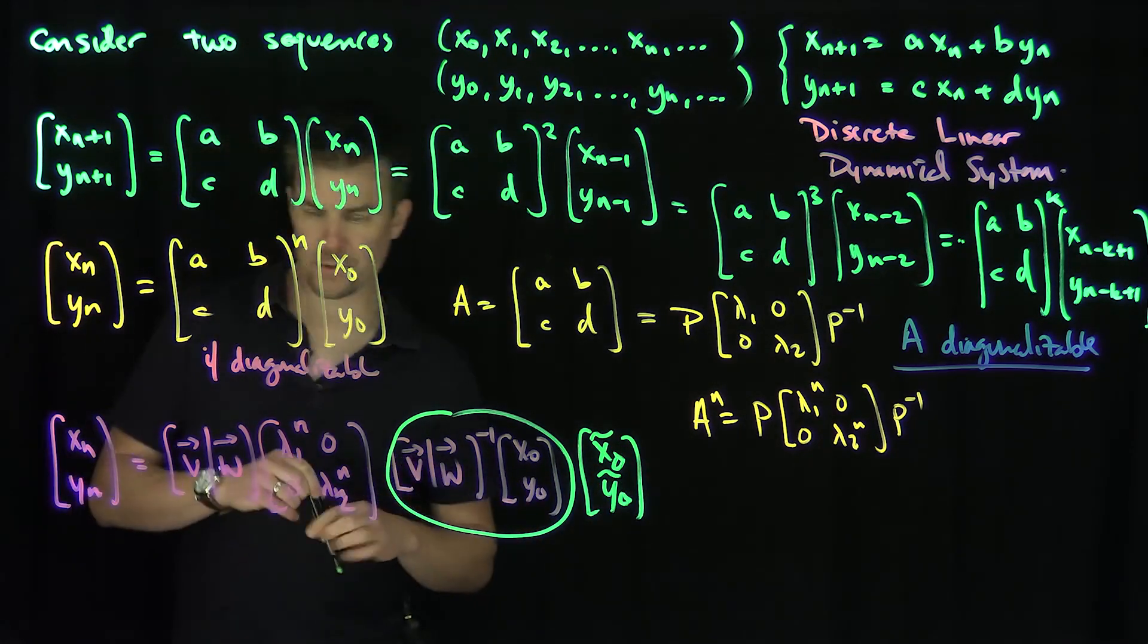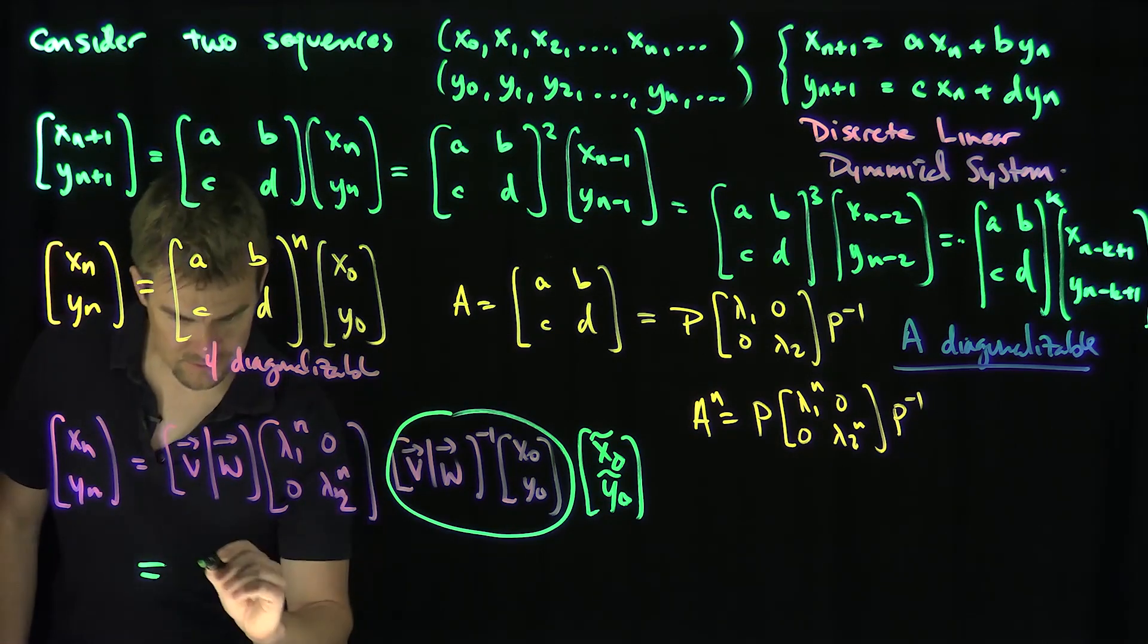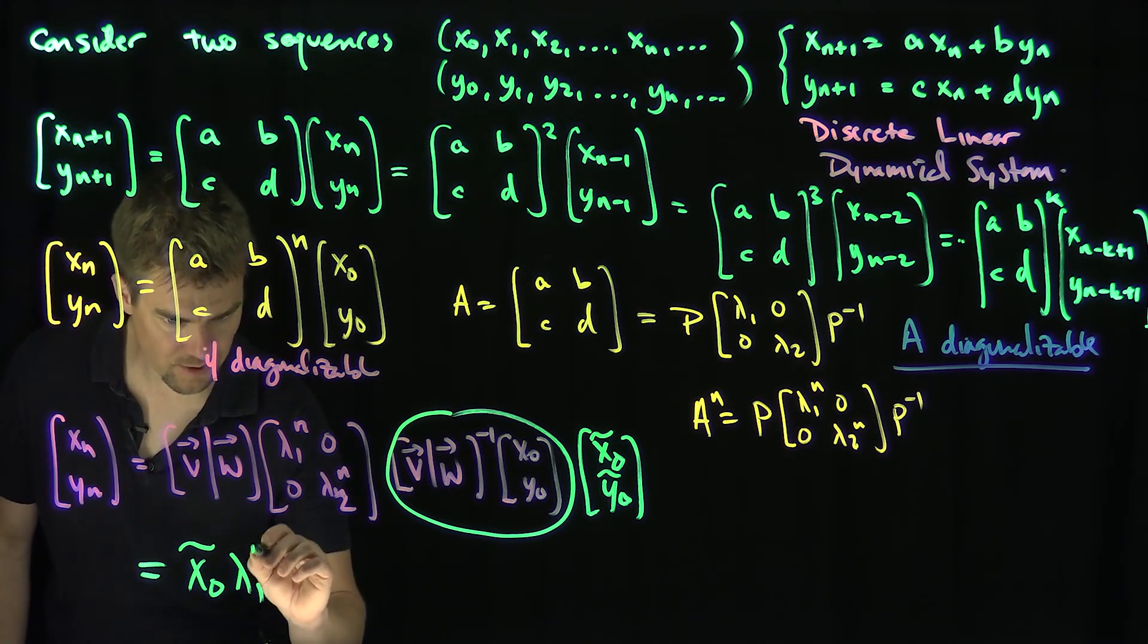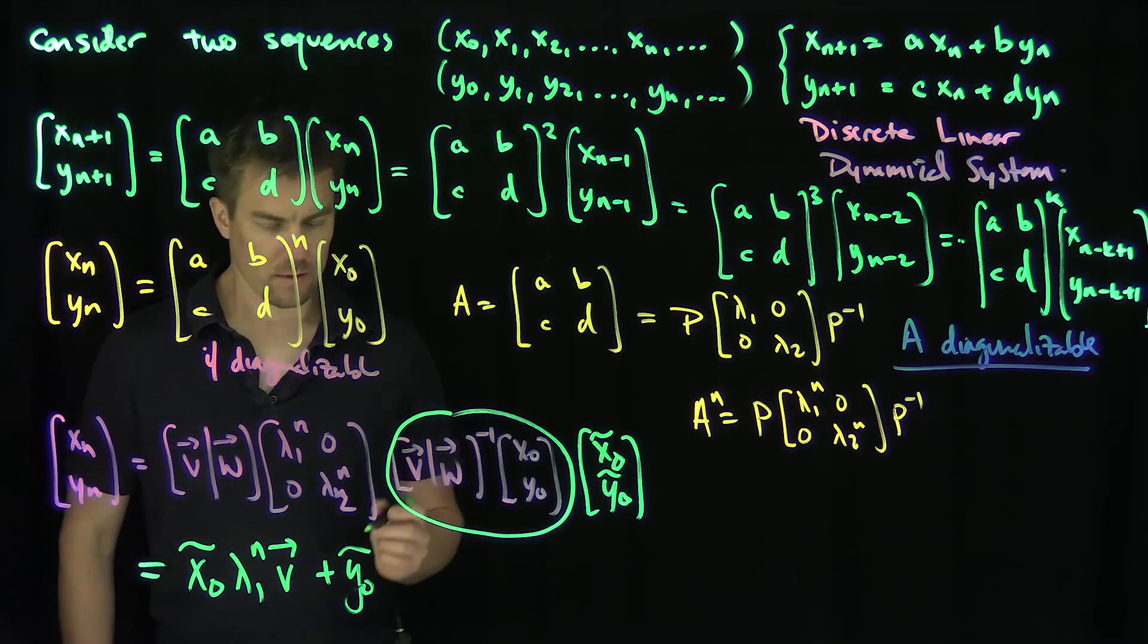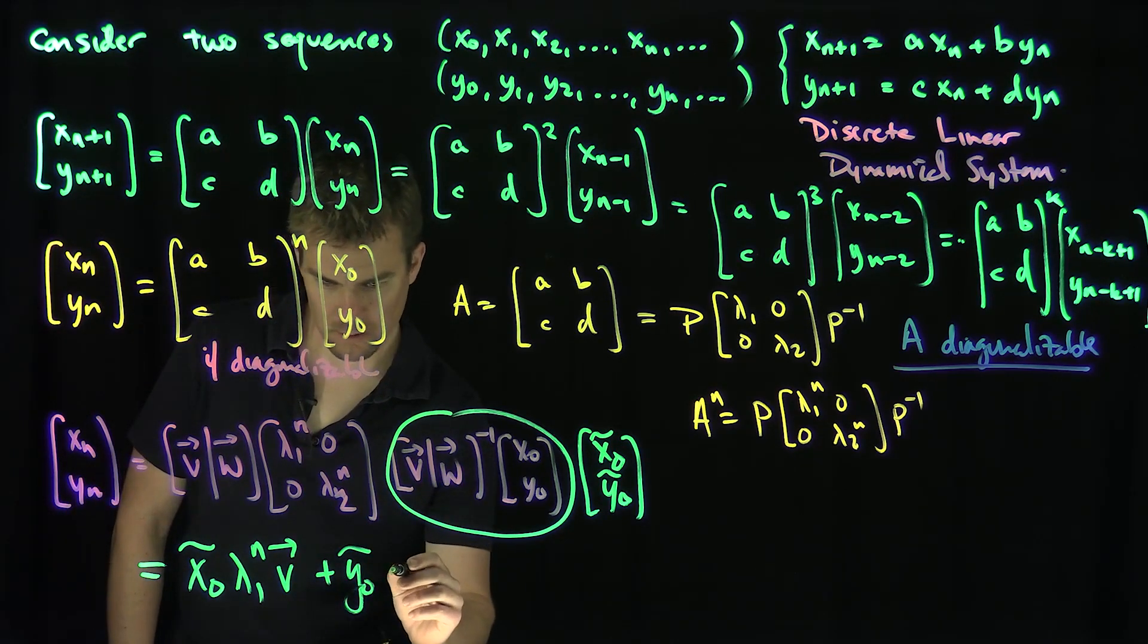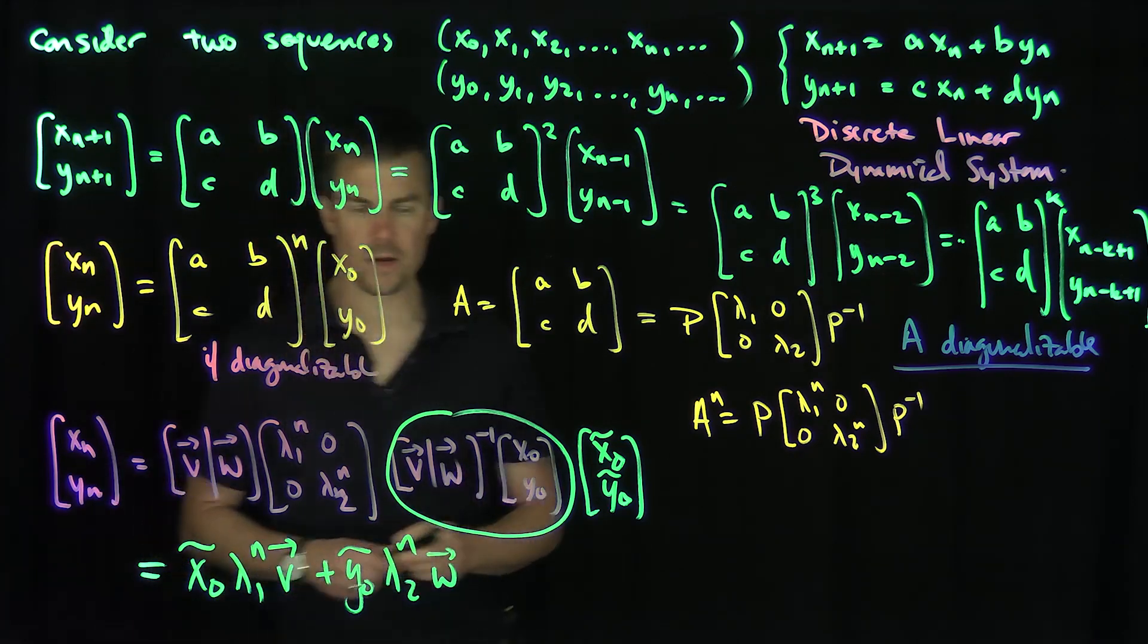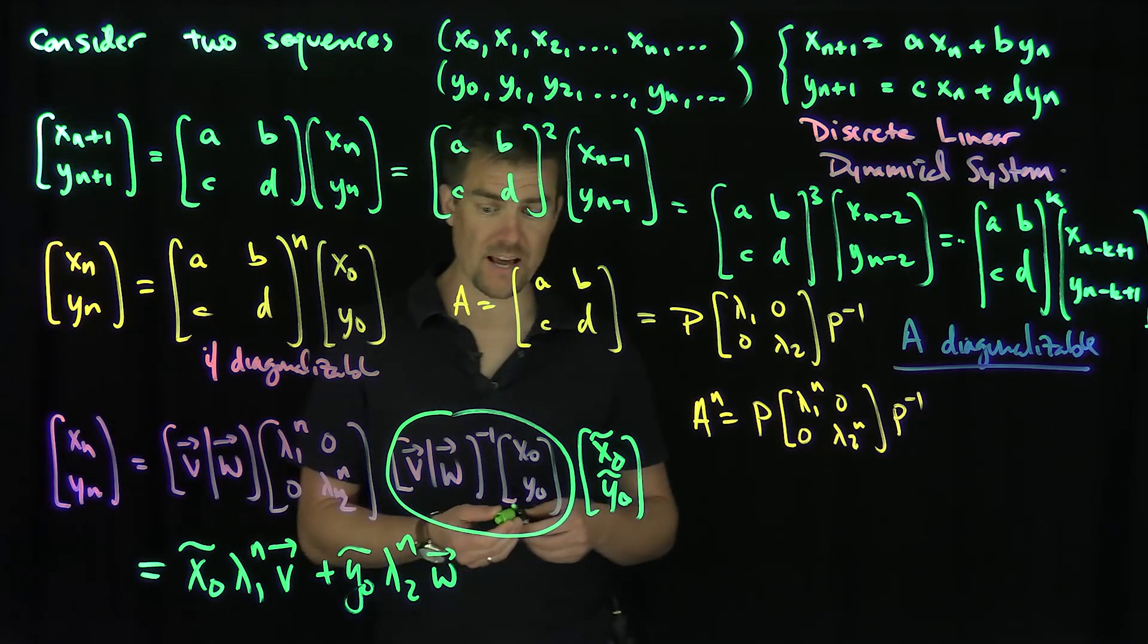And then if we foil this out, foiling this whole thing out is going to be x 0 tilde, then lambda 1 to the power of n, V, plus y 0 tilde times lambda 2 to the power of n, W. And so now asymptotically, well, how do we figure out what the asymptotic behavior of this dynamical system is?